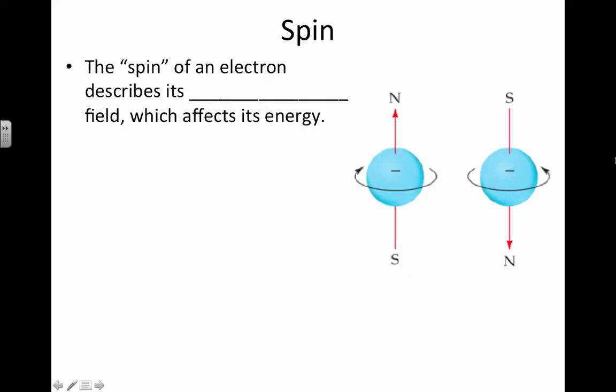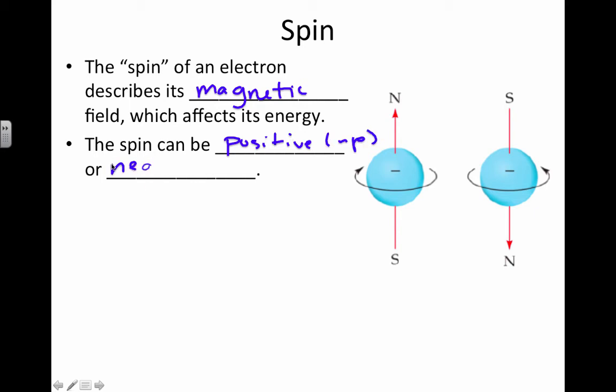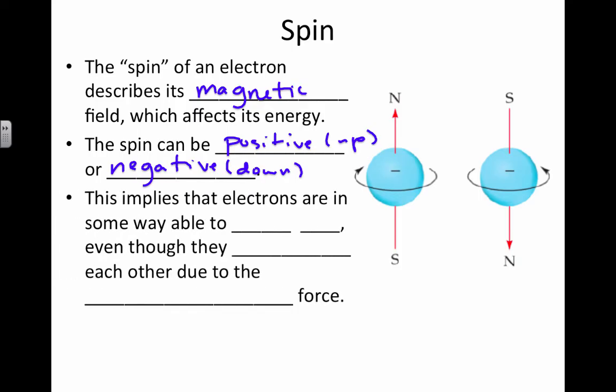Now let's look more at spin. I've mentioned spin a bit during this podcast. Spin is describing the magnetic field of the electron, which affects its energy. So we call this spin positive, or up, or we call it negative, or we represent that as down.